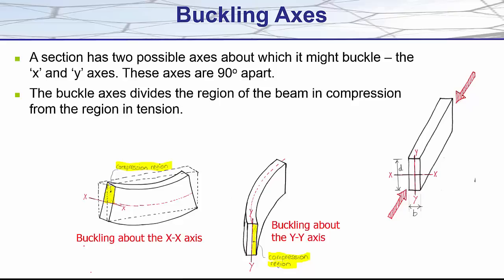Over here our member is buckling about its x-axis as the top half of our member is in compression. And to the right here our member is buckling about its y-axis as when looking at the deformed shape the region in compression is to the right. All things being equal, a section will always buckle about its least stiff axis.